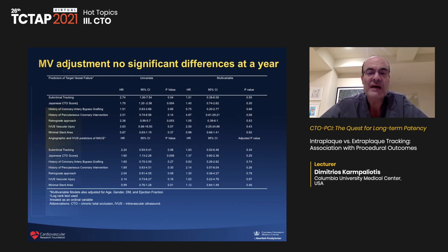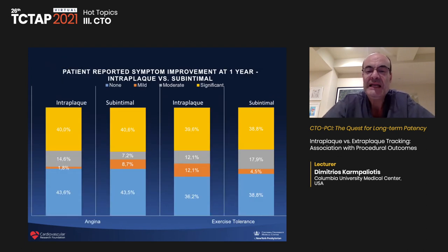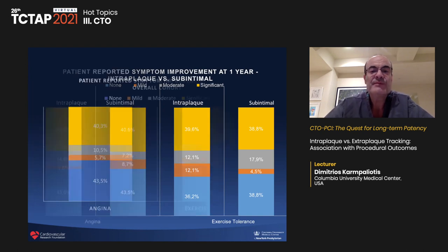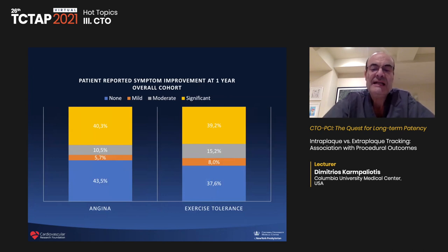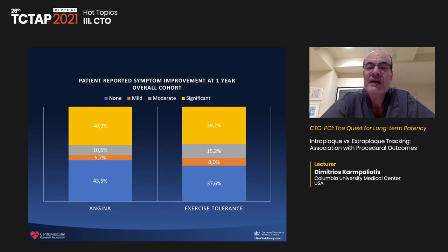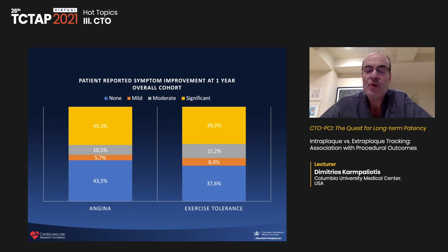The conclusion was that whether you went intraplaque or extraplaque, as long as you had a successful result at the end of the case, it didn't really matter whether you stayed intraplaque for the entire course or had some form of extraplaque wire tracking. The CONSISTENT CTO study from the UK — led by Simon Walsh and James Spratt — was a slightly larger study with essentially the same message: extraplaque lesions are more complex, but clinical results are comparable whether intraplaque or extraplaque.